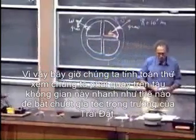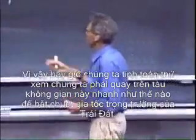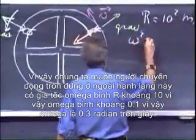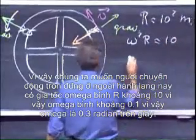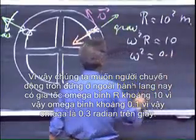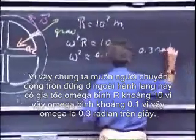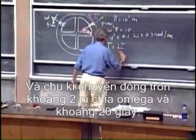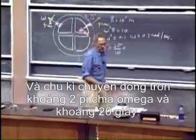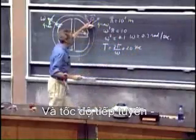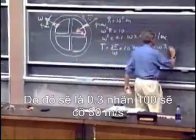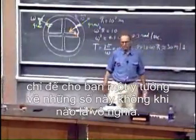So we could now calculate how fast we have to rotate this spaceship to mimic the gravitational acceleration on Earth, which is 9.8 meters per second squared — let's call that 10, just to round it off. We want the people walking in this corridor to have an acceleration ω²r ≈ 10, so ω² ≈ 0.1, and ω ≈ 0.3 radians per second. The period to go around is about 2π divided by ω, which is about 20 seconds. The tangential speed v = ωr = 0.3 × 100 ≈ 30 meters per second. These numbers are by no means ridiculous.